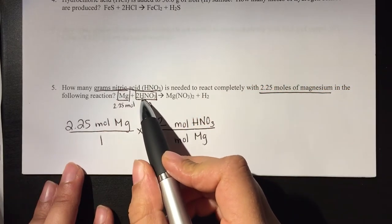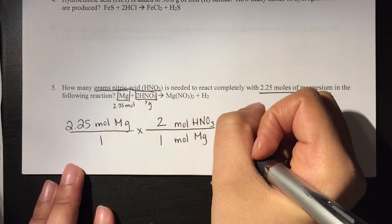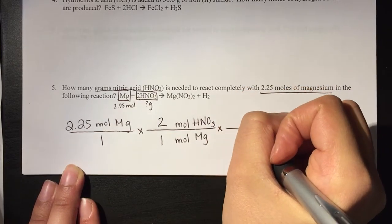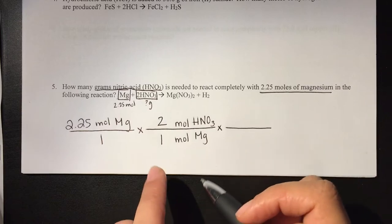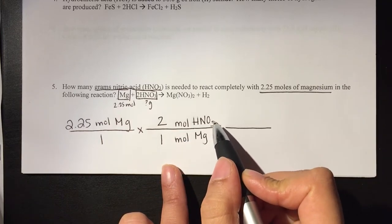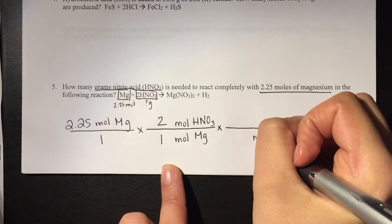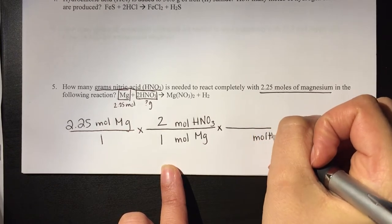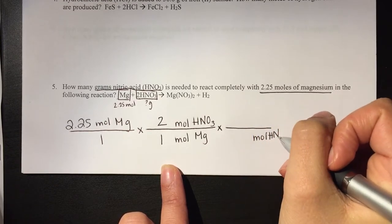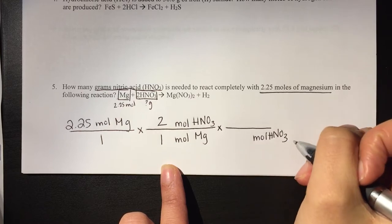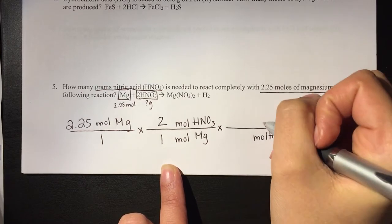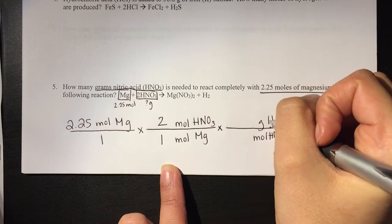We're still not done. We're trying to get to grams of nitric acid, so we set up our last piece. We have moles of nitric acid here, so moles of nitric acid have to go down here, and that can be connected to grams of nitric acid.